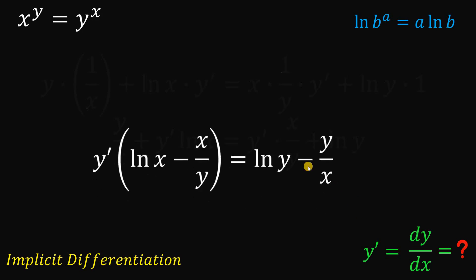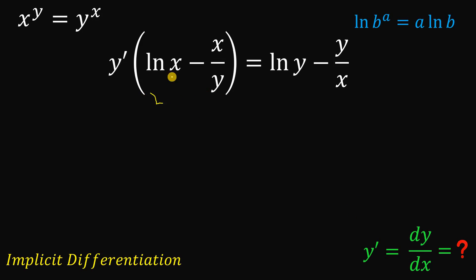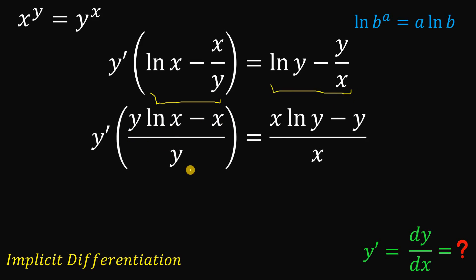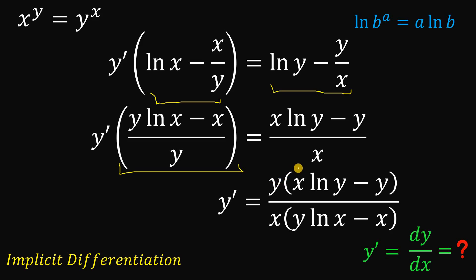Now let's focus on this result. From here, what we're going to do is to combine these two terms: ln x minus x over y, and ln of y minus y over x. So this is just y times (ln x minus x) all over y. And this is just x times (ln y minus y) all over x. To get the value of y prime, we multiply both sides by the reciprocal of this term, which is y over (y times ln x minus x).